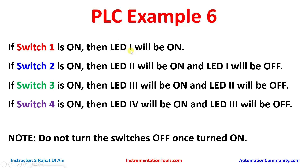For LED 1 to be ON, switch 1 should be ON, and for LED 1 to be OFF, switch 2 should be ON. For LED 2 to be ON, switch 2 should be ON, and for LED 2 to be OFF, switch 3 should be ON. For LED 3 to be ON, switch 3 should be ON, and for LED 3 to be OFF, switch 4 should be ON. For LED 4 to be ON, switch 4 should be ON. Please note: do not turn the switches OFF once turned ON. We will put switch 1 ON, then without turning it OFF put switch 2 ON, then switch 3, then switch 4.